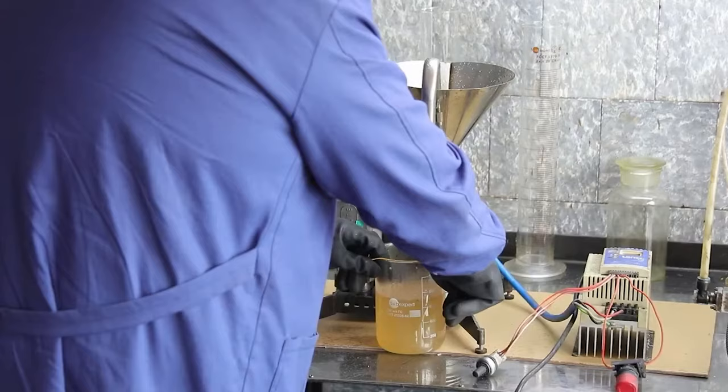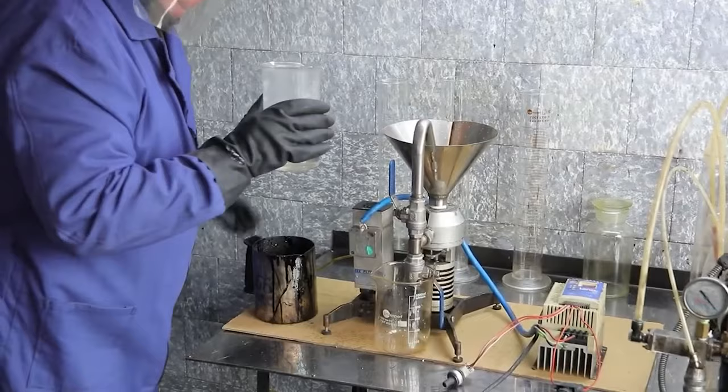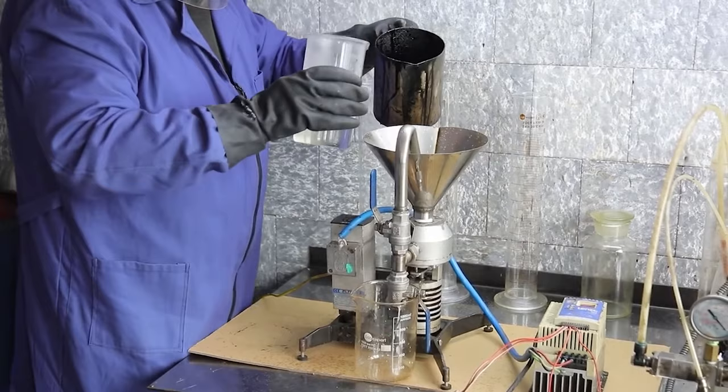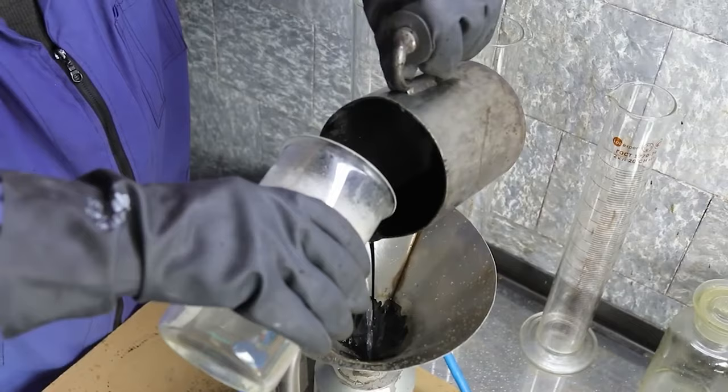Next, we take the bitumen previously heated to 135 degrees Celsius and the blend heated to 60 degrees Celsius. At the same time, we slowly pour them into the funnel of the colloid mill. After these ingredients have passed through the mill, we obtain a bitumen emulsion at the outlet.